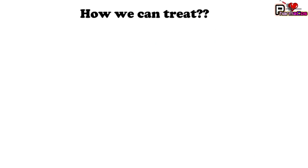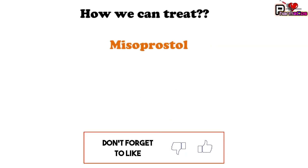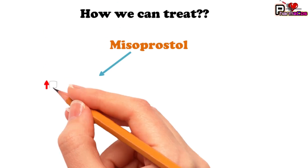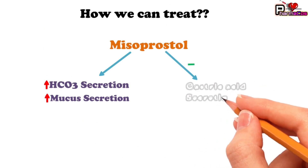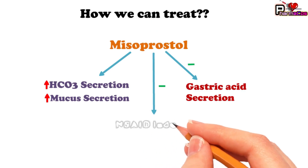Since gastric ulcers are produced due to the inhibition of prostaglandins, we can give drugs externally which are prostaglandin E1 analogs, so that they can decrease gastric acid production caused by NSAIDs. Misoprostol is one such PGE1 analog. It has dual actions: increased bicarbonate secretion and mucous secretion, while also controlling gastric acid secretion. Therefore, misoprostol can be used to treat NSAID-induced gastric ulcers.